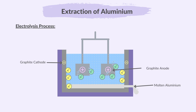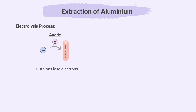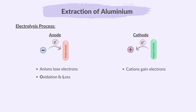Several large graphite blocks are connected to the positive terminal of the power supply, making them the positive electrodes or anodes. The anodes attract negative ions — oxide ions — from the electrolyte. At the anode, oxidation occurs as oxide ions lose electrons to form oxygen gas. At the cathode, aluminium ions gain electrons. Oxidation is when something loses electrons, and reduction is when something gains electrons. An easy way to remember this is the mnemonic OIL RIG.